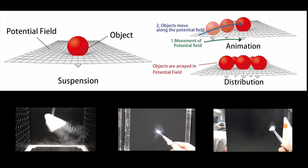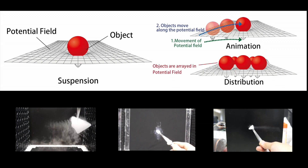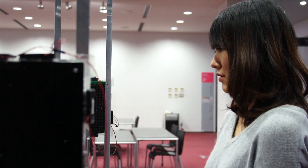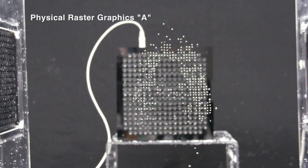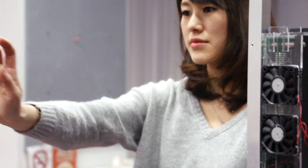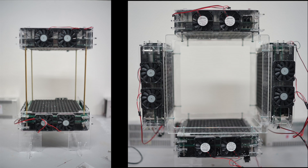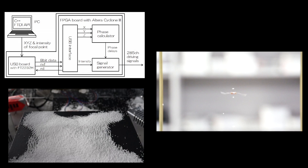For this study, we used three options of the acoustic potential field: 2D grid, high-speed movement, and a combination with motion capture. These are used to realize a floating screen for raster graphics, vector graphics, and interaction with levitated objects.